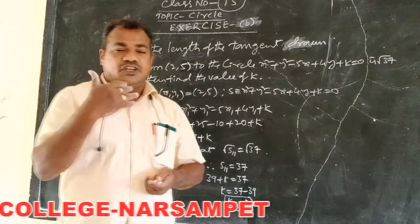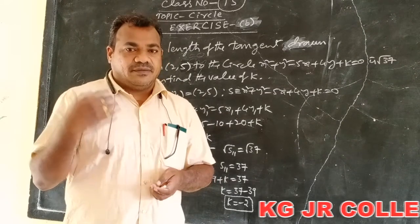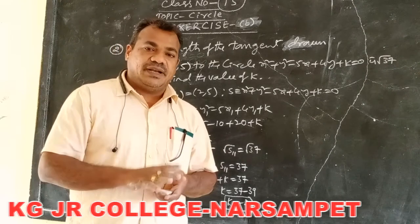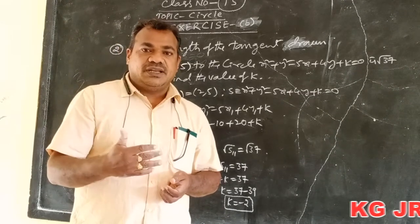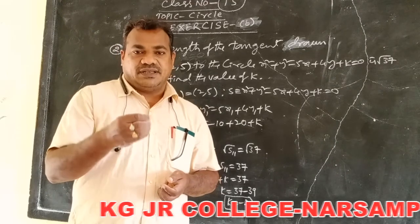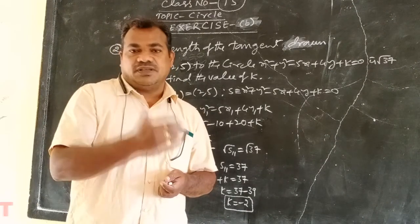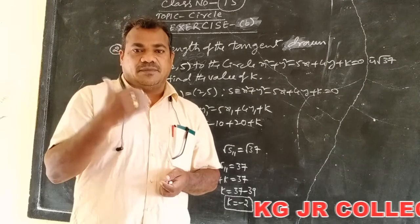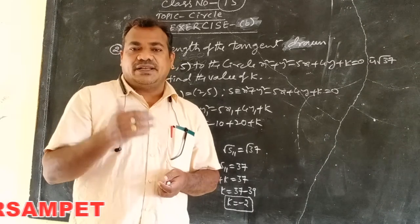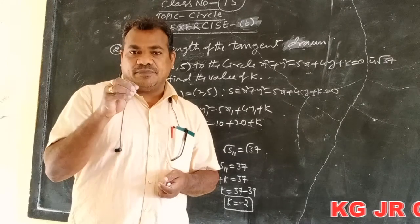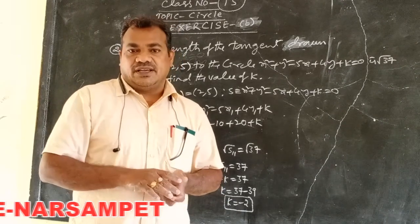In this exercise we discussed the position of the point, the power of the point, and the length of the tangent drawn from the point to the circle. Both depend on S₁₁. If S₁₁ > 0, the point lies exterior to the circle and its power is positive. If S₁₁ = 0, the point lies on the circle and its power is 0. If S₁₁ < 0, the point lies interior to the circle and its power is negative. The length of the tangent is root S₁₁.